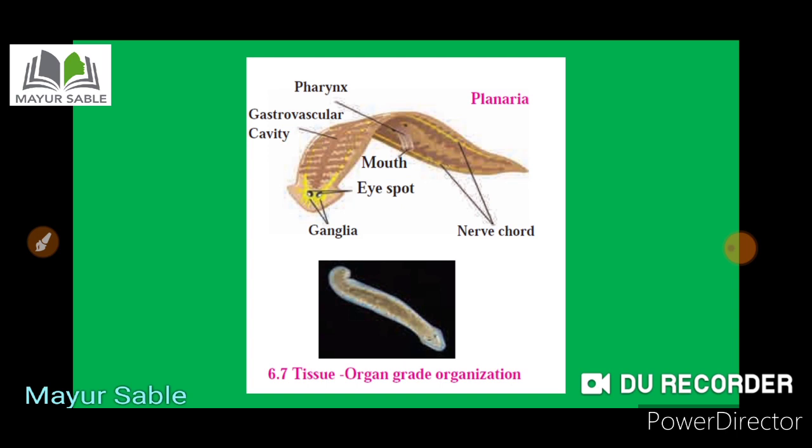In this manner, some animals show different types of organization: protoplasmic grade, cellular grade, cell-tissue grade, tissue-organ grade, and organ system grade organization. The grade of organization is an important criteria for the new system of classification.